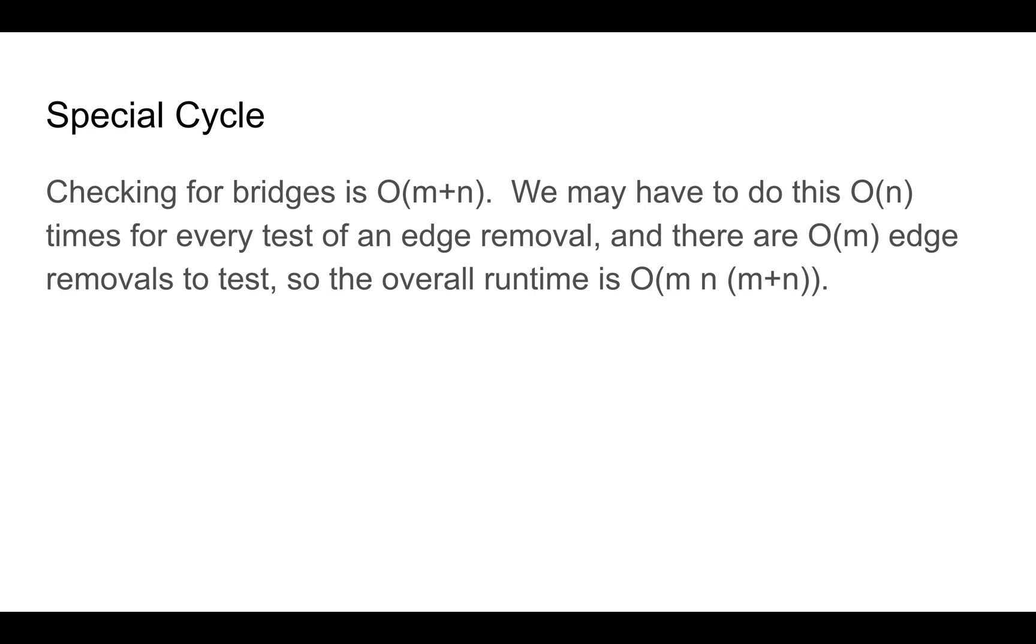So the overall runtime is O(m*n*(m+n)), which if m is O(n²), turns out to be O(n⁵). And n=300, O(n⁵) is pretty big, but it turns out this actually runs in time because there's a lot of smaller constant factors attached to it.